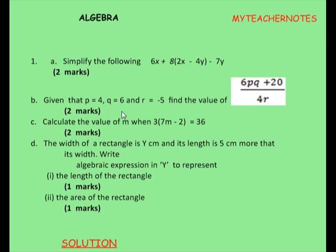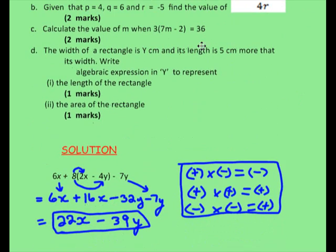The second part is replacing letters with numbers. In this case we call these letters variables, and we also want to calculate the value of an unknown in an equation that includes brackets again. And the next thing we want to do is to write expressions in y to represent length of a rectangle and area of a rectangle.